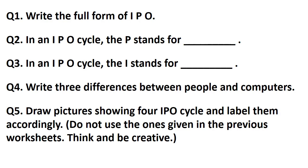Question number 5: Draw pictures showing 4 IPO cycles and label them accordingly. Do not use the ones given in the previous worksheets — think and be creative. For example, kids can draw how we bake a cake: under input draw cake batter, under process draw an oven, and under output draw cake. Or they can draw how plants grow.